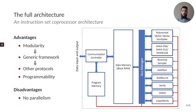We also implemented the remaining parts and organized the design according to an instruction set coprocessor architecture. That means each block is built independently of the others and is handled by a central controller. In this way we do lose some slight performance, since it is not possible to parallelize the different blocks as they are handled sequentially by the program memory. However this has several advantages. Firstly it is highly modular: it is possible to replace, add, or remove each module independently. This allows us to propose a generic framework that can also work for other protocols. For instance, if one wants to implement Kyber, which uses an NTT-based polynomial multiplier, it is possible to simply replace the polynomial multiplier with an NTT-based one while reusing all the other components.